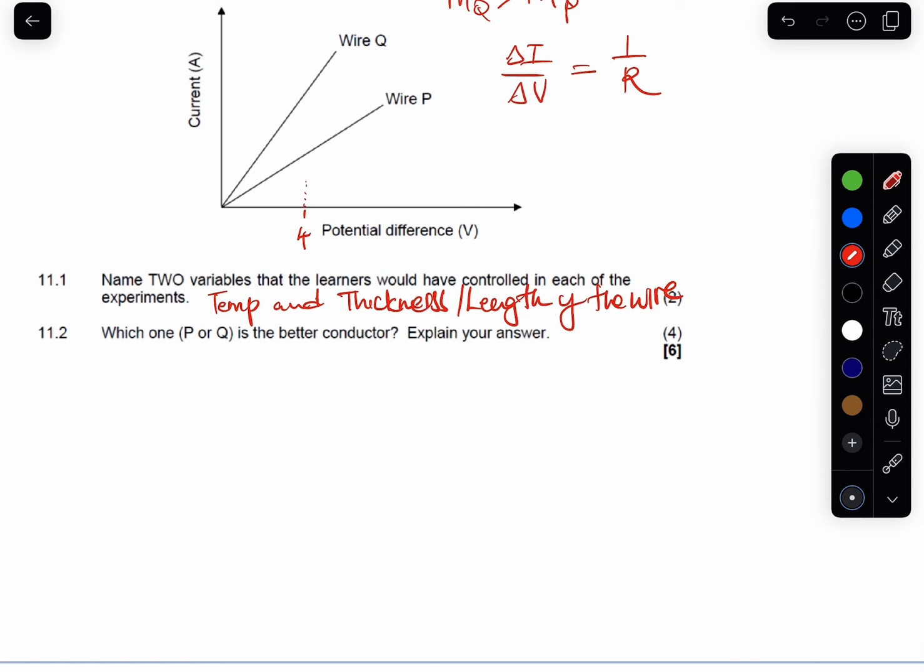So for both wires, the potential difference is going to be 4. It's going to be 4. But what is different in the same potential difference is the what? Is the current. If you're looking at the current of, let's say this is 2 and this is 4, if you're looking at the current of Q, it's greater than the current of wire P, but for the same potential difference.